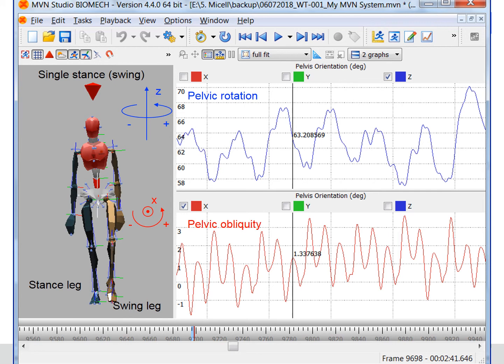For the pelvic obliquity, the slope is also almost zero. We also consider it has an offset, for example, 1 degree.